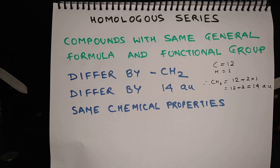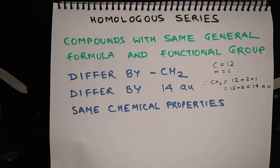So to sum up, I talked about some important features of carbon as an element, then I talked about covalent bonds, hydrocarbons, functional groups, and homologous series. That's all for this lesson. Thank you.